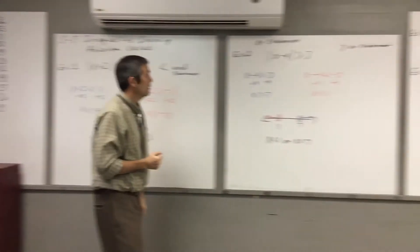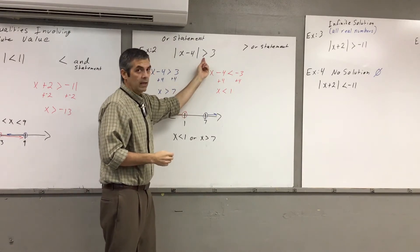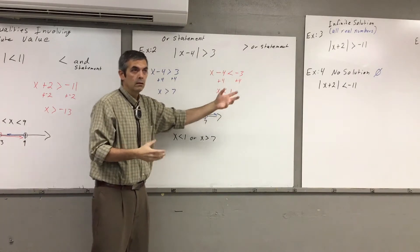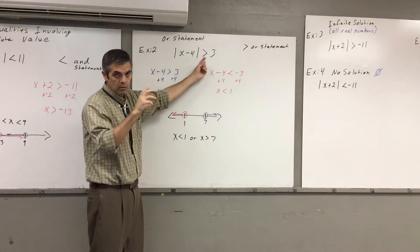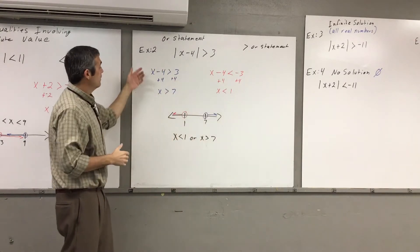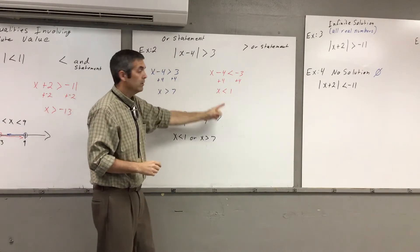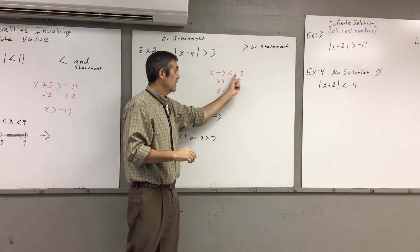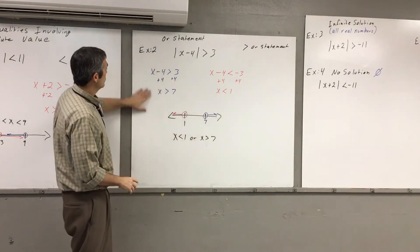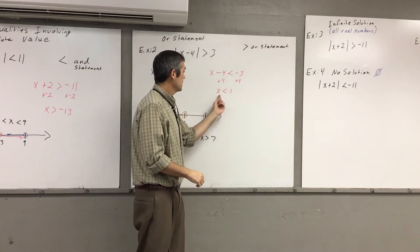Now let's look at our 'or' statement. We have the absolute value of x minus 4 is greater than 3. This is our 'or' statement — it could have been greater than or equal to, still an 'or' statement because I look at the actual greater than or less than to tell me which statement I'm dealing with. So greater than means 'or' statement. We split it up: x minus 4 is greater than 3, and then x minus 4 is less than negative 3, flipping the inequality and changing the sign. Solving: add 4 to both sides — x is greater than 7. Add 4 to both sides — x is less than 1.